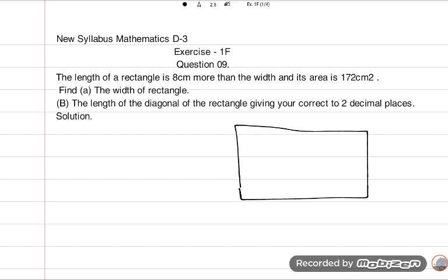So what we will do? Write the values given. Length is equal to what? Don't know. Width is equal to what? Don't know. But we only know length is 8 centimeters more than width. That means we have to use variables for length and width both. Because we know that only a single variable we can find in an equation at a time.